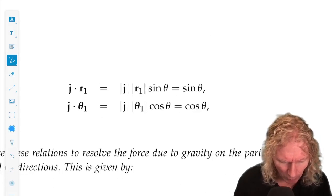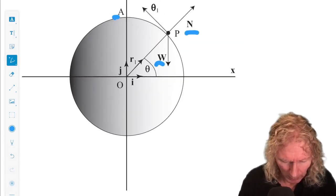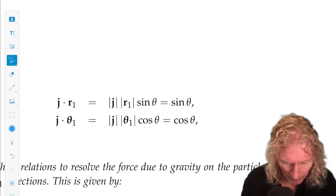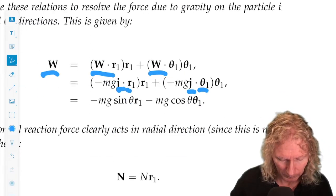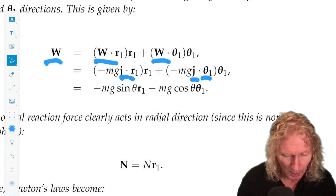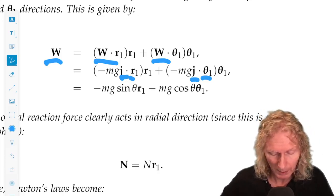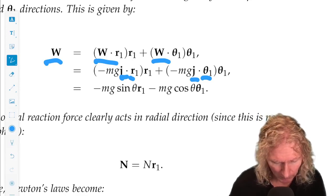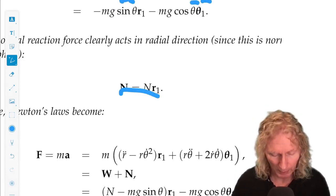So we use our expression for resolving or writing the vector W in terms of components multiplied by the unit vectors R1 and theta 1. So we're going to need J dot R1, J dot theta 1. We can use a little bit of trigonometry here to express that. And we have J dot R1 is sine theta, J dot theta 1 is cosine theta. Plugging that into these expressions, we get the gravitational force W is minus Mg sine theta R1 and minus Mg cosine theta theta 1. And the normal force is just in the radial direction.